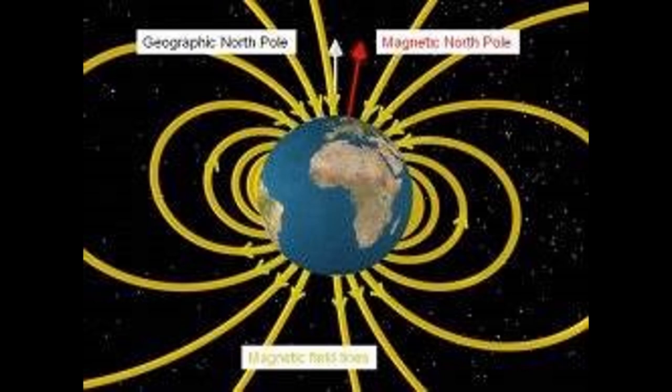The Earth's magnetic field extends far into space, where it meets the interplanetary magnetic field, which is carried throughout the solar system by the solar wind — a gusty stream of plasma that flows through the solar system at typical speeds of 450 km per second. The solar wind is diverted around the Earth's magnetic field, which compresses it on the side facing the Sun and stretches it into a long tail on the side pointing away from the Sun. The region of space containing the Earth's magnetic field is called the magnetosphere.